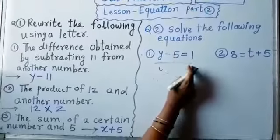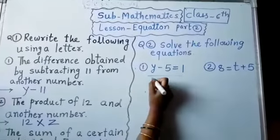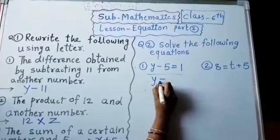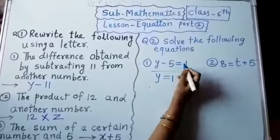y minus 5 is equal to 1. This is our first equation. So, write down y as it is. Then, is equal to 1 as it is. Here,